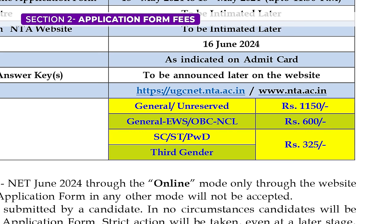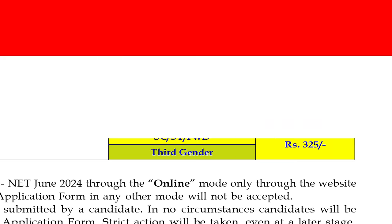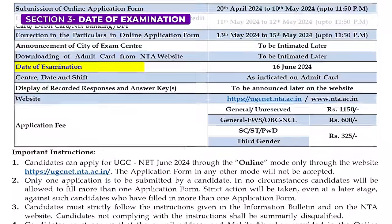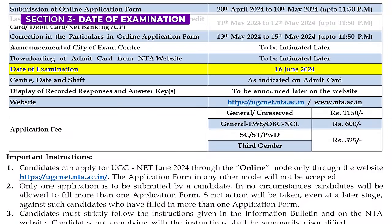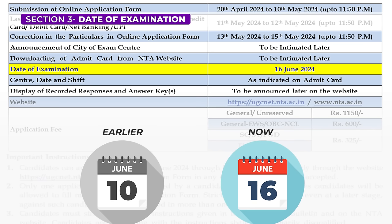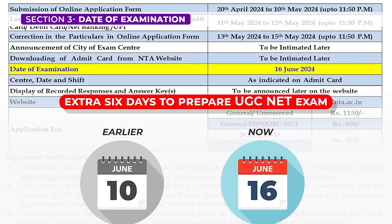Section 3: Date of Examination. As you can see in the schedule, there's been a change in the examination date. Originally set for June 10th, it's now moved to June 16th, 2024. This adjustment gives you an extra 6 days to prepare and bring your A-game on exam day. Make the most of this extra time to ensure you are fully ready to tackle the test with confidence.